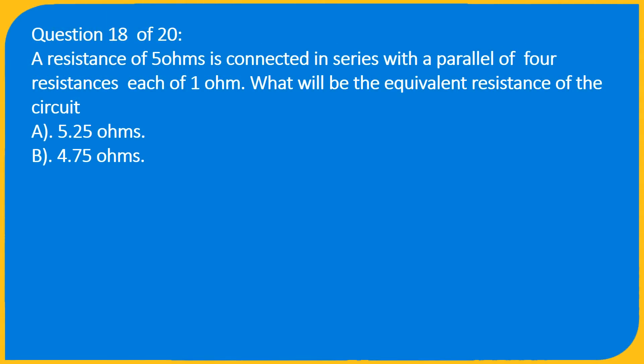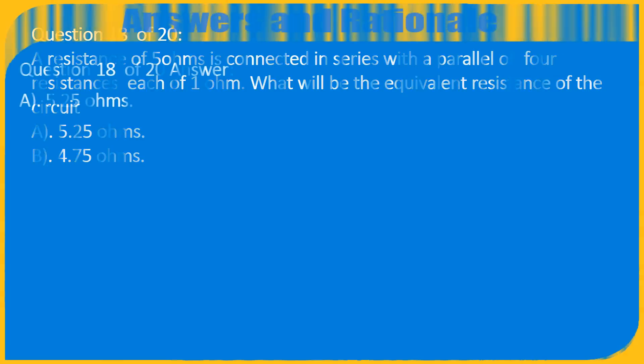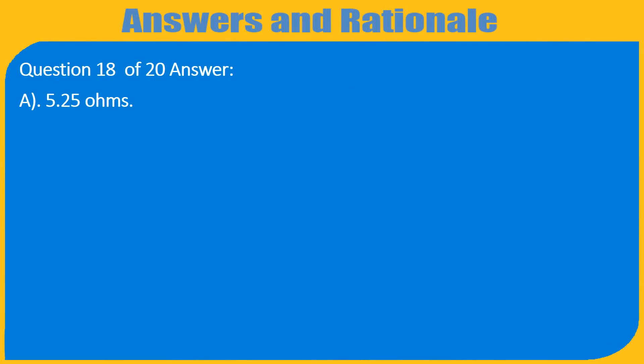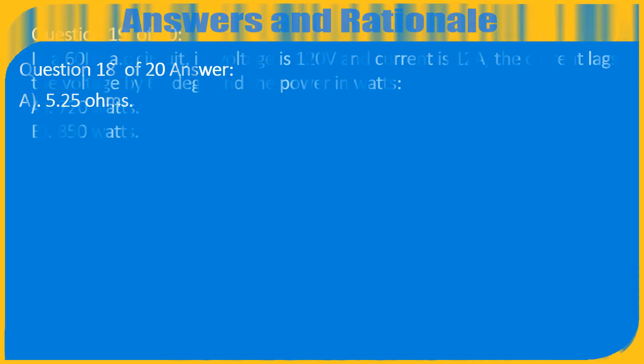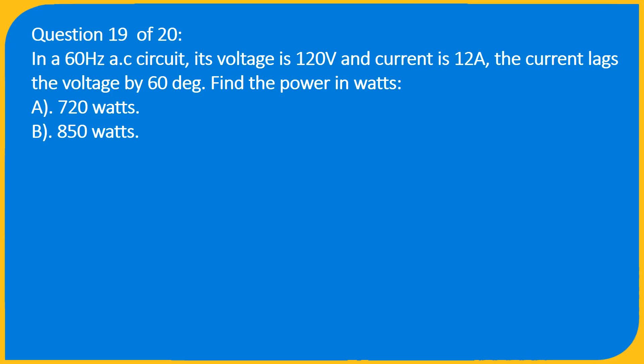Question 18 of 20: A resistance of 5 ohms is connected in series with the parallel combination of 4 resistances each of 1 ohm. What will be the equivalent resistance of the circuit? A. 5.25 ohms, B. 4.75 ohms. Answer: A. 5.25 ohms.